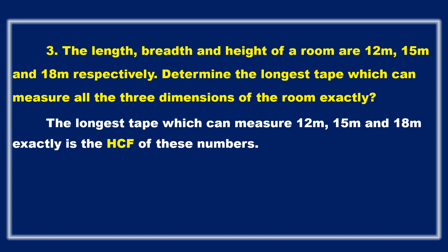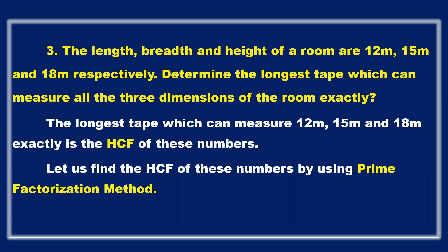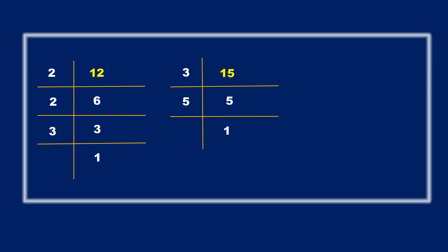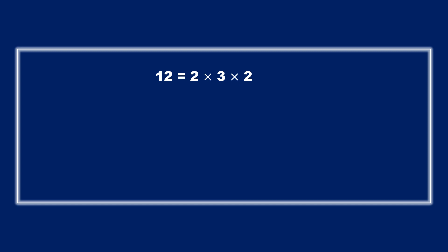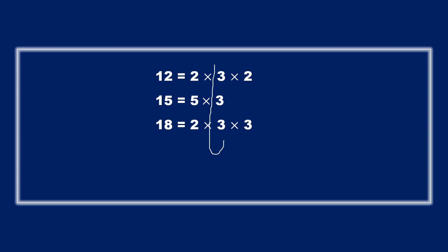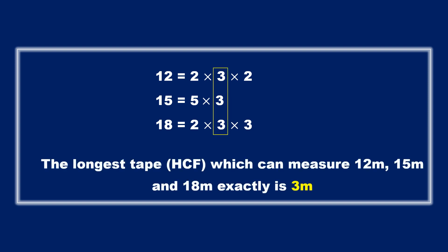We use the prime factorization method. For 12: 2 × 2 × 3. For 15: 3 × 5. For 18: 2 × 3 × 3. Looking at the common factors — 2 appears in 12 and 18 but not in 15, so we cannot take 2. Only 3 is common to all three. So the HCF is 3, and the longest tape which can exactly measure 12 m, 15 m and 18 m is 3 meters.